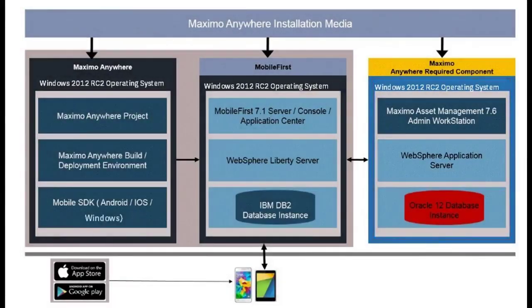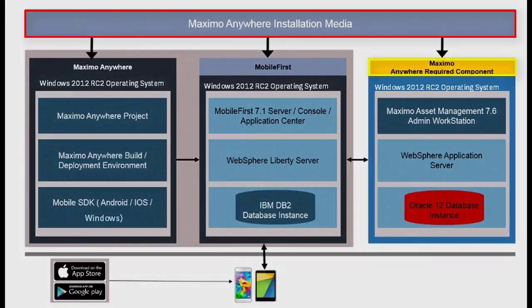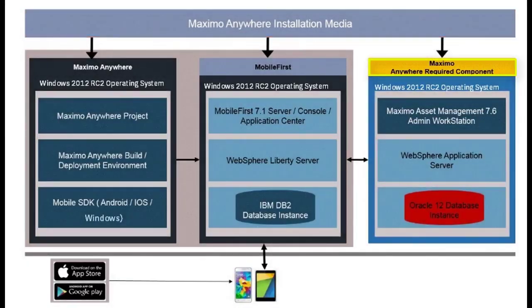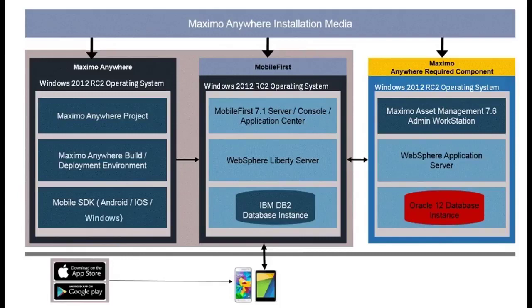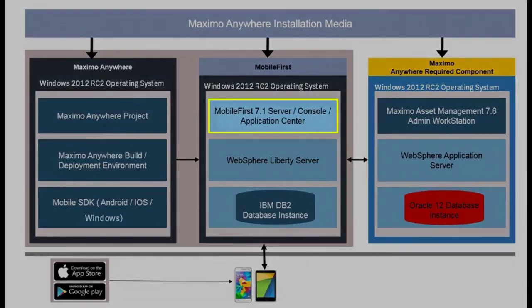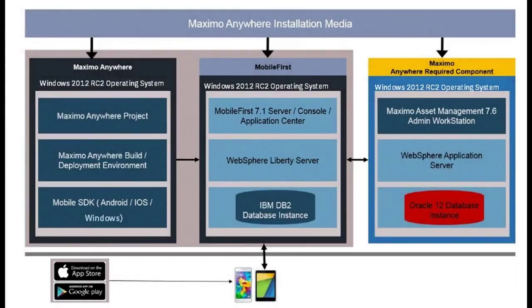In videos 2 and 3 we will cover Maximo Anywhere prerequisites and some administration tasks. Videos 4 through 6 will cover the overview and installation of the required components on the computer where Maximo asset management is installed. In video 7 we will cover installing our middleware, WebSphere 8.5.5 Liberty Profile, on our MobileFirst server. Videos 8 and 9 will cover installing the MobileFirst server itself. Video 10 will cover installing Maximo Anywhere 7.6.2.